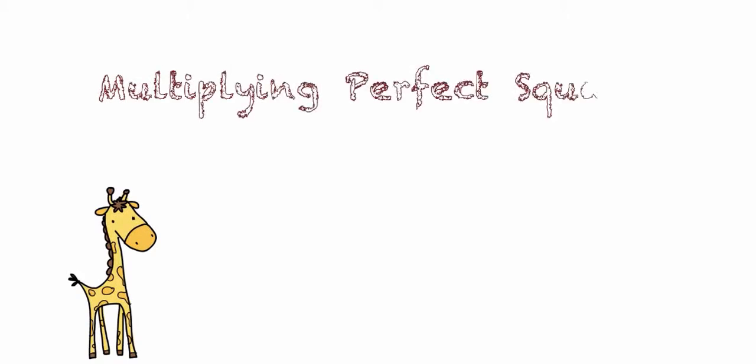We're going to be working on multiplying perfect squares. Let's start by looking at an example using whole numbers before we move on to variables.